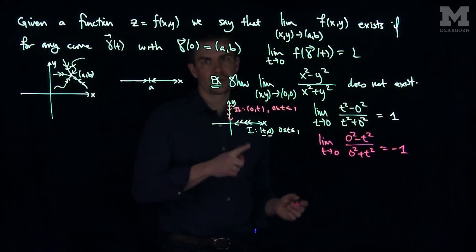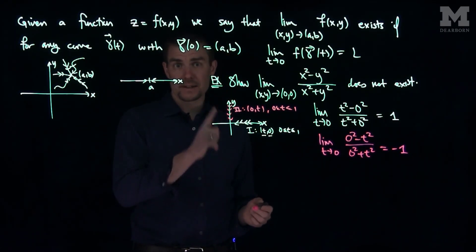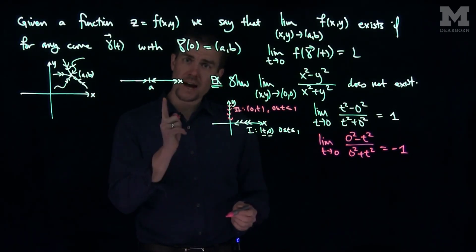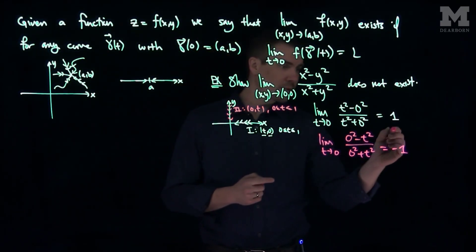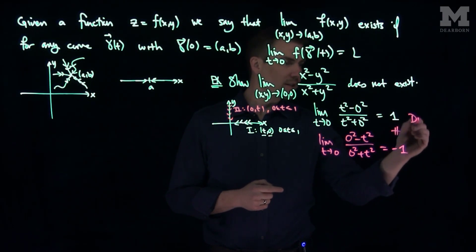So for this function, the limit along the y-axis is negative 1, and the limit along the x-axis going to 0, 0 is positive 1. Those are not the same values, those numbers are not equal, so the limit does not exist.